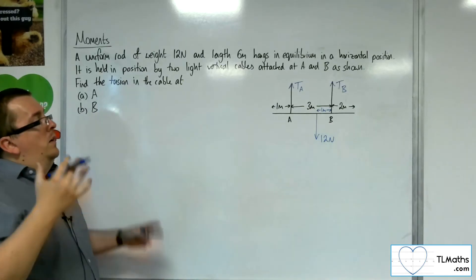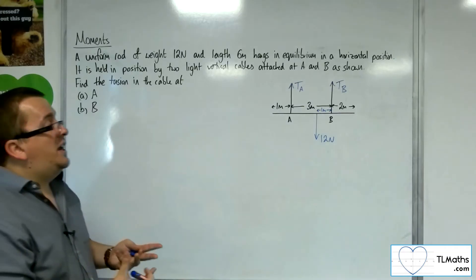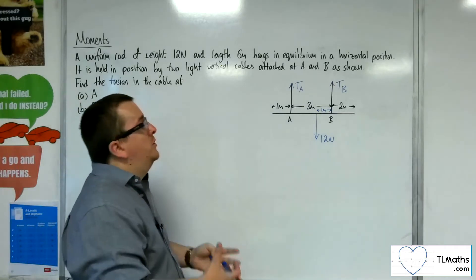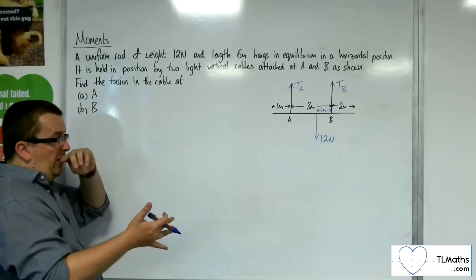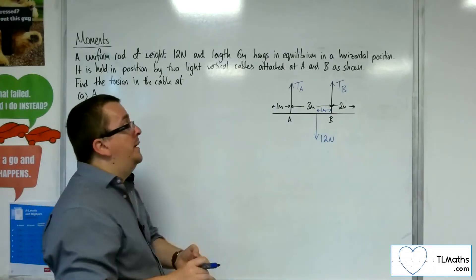So in order to find the tension of the cable at A, if I take moments about point B, then that means I don't have to worry about the tension at B.